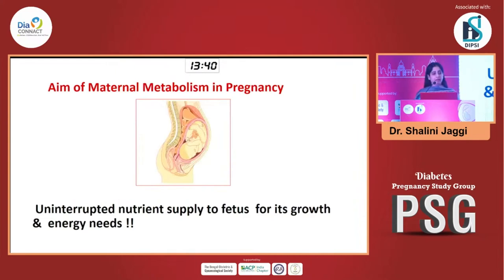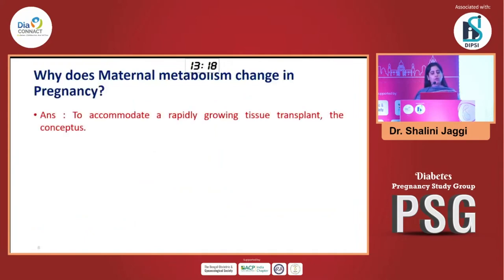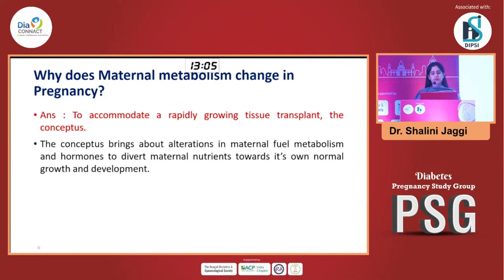Now going on to the pathophysiology of hyperglycemia in pregnancy, and I'll focus mainly on GDM. Before we understand what goes wrong, we need to know what happens in a normal pregnancy. The entire aim of maternal metabolic change in pregnancy is to provide an uninterrupted nutrient supply to the fetus for its growth and energy needs. The important question is why does the mother's metabolism change? Because there is a rapidly growing tissue — the conceptus — in her body, which alters her carbohydrate metabolism and hormones.